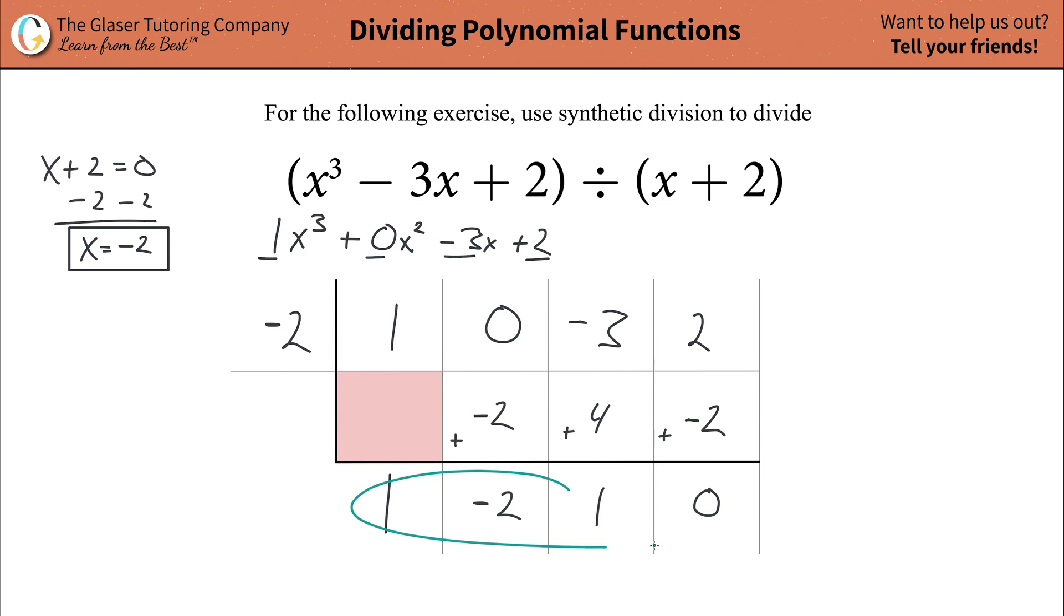Now, what these values represent are the following. The last term here will always represent your remainder. The next term is going to represent your constant term. The term after that is going to be the x term. The term after that is going to be the x squared term, and so on: x cubed, x to the fourth, etc., however many values you have.